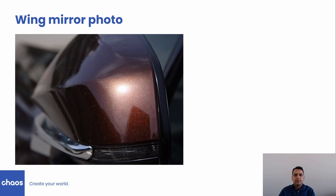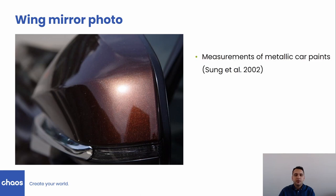This is a photograph of a wing mirror that I will use as a motivating example. The car paint has a layer of metallic flakes that produce sharp glints when they are oriented to reflect light towards the camera. Therefore, the distribution of flake orientations plays a dominant role in the overall appearance. However, measurement data supports that other factors also contribute to the appearance, like flake size and the roughness of individual flakes.